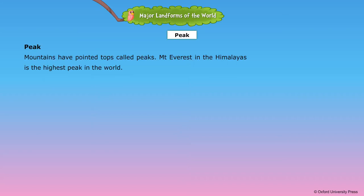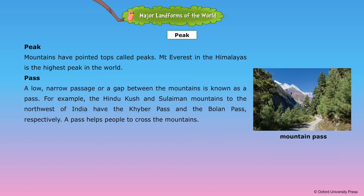Peak. Mountains have pointed tops called peaks. Mount Everest in the Himalayas is the highest peak in the world. Pass. A low, narrow passage or a gap between the mountains is known as a pass. For example, the Hindukush and Suleiman mountains to the northwest of India have the Khyber Pass and the Bolun Pass respectively.